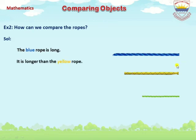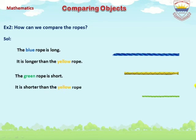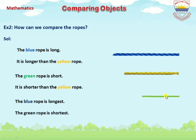We compare the blue row with the yellow row — the blue row is longer than the yellow row. The green row is short. Look at the picture — the green row is shorter than the yellow row. The blue row is the longest and the green row is the shortest. As you see in the picture, we compare three rows according to their length.